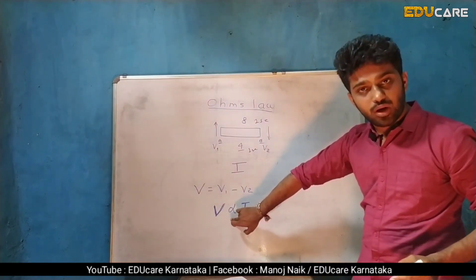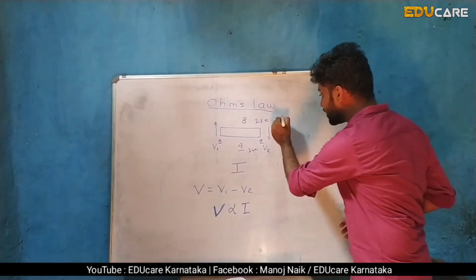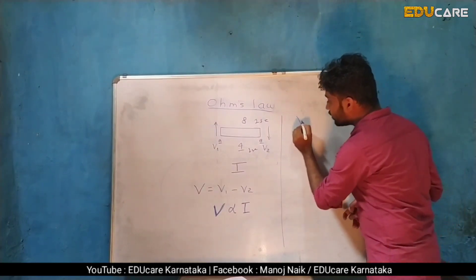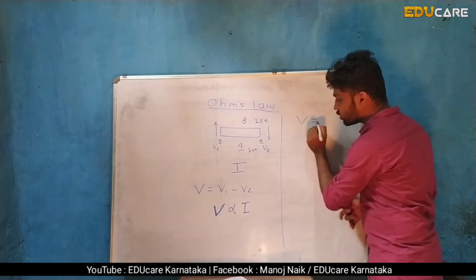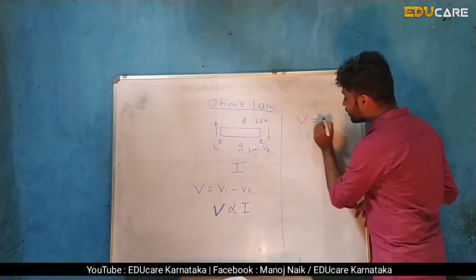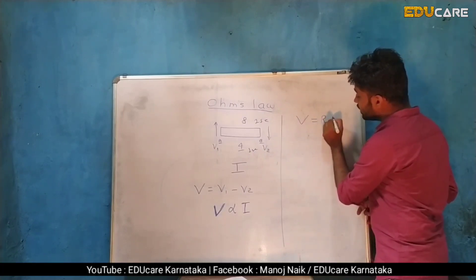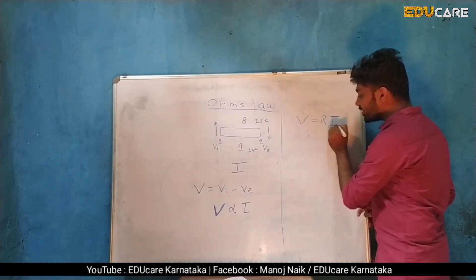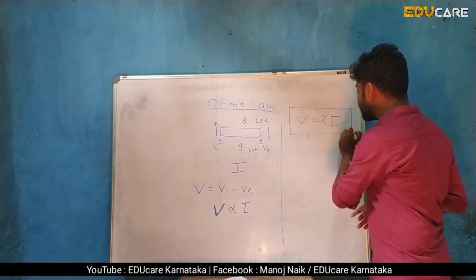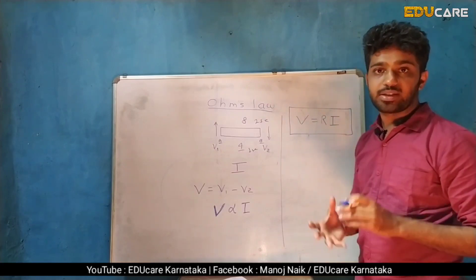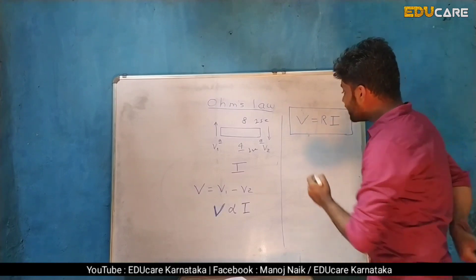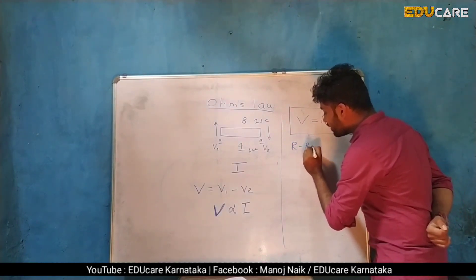This is the proportionality symbol. When we introduce a constant, the proportionality becomes equality. So V equals R times I, where R is the constant called resistance and I is the current. This is Ohm's Law in its mathematical form: V equals IR.